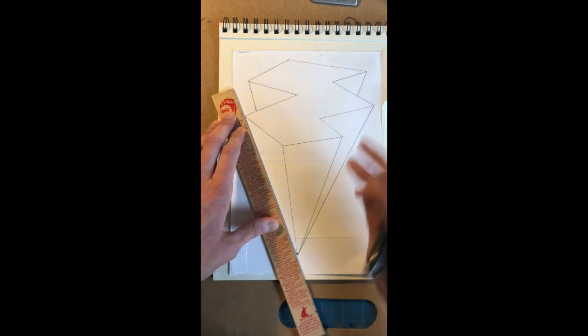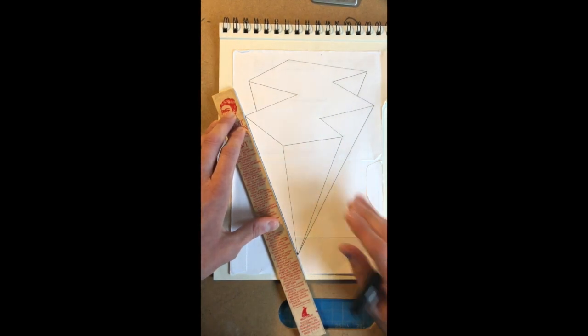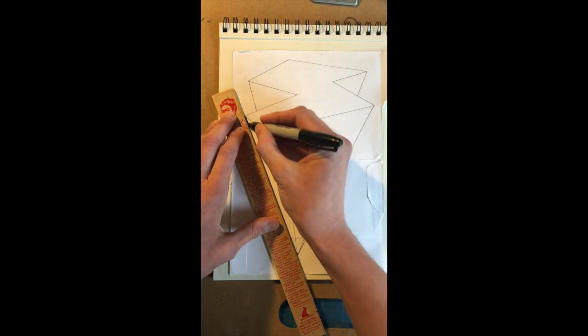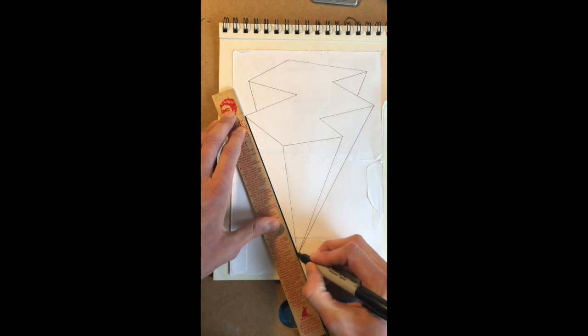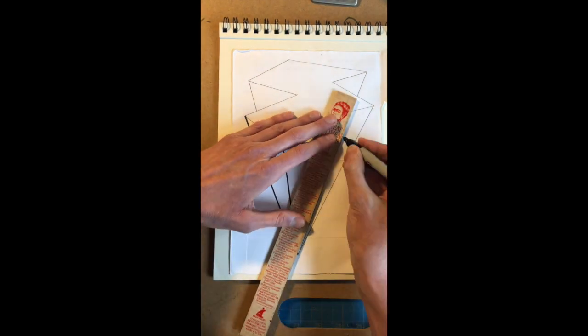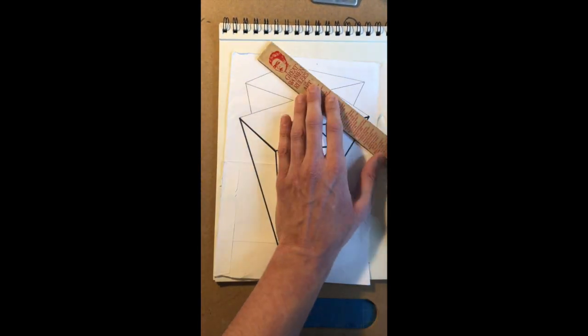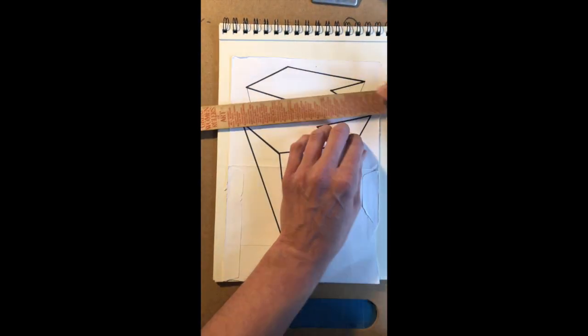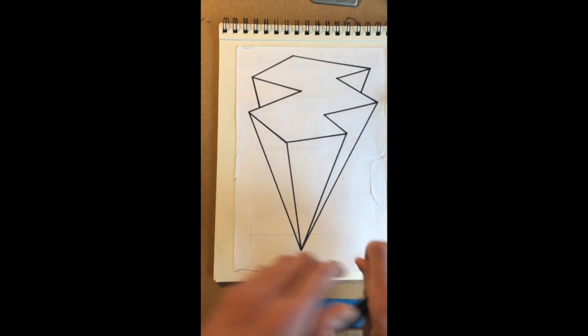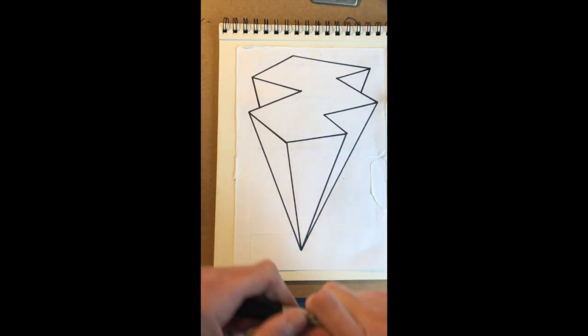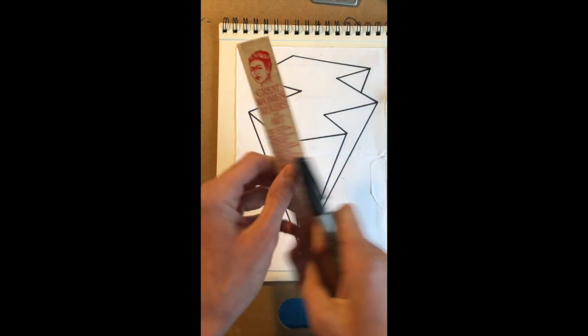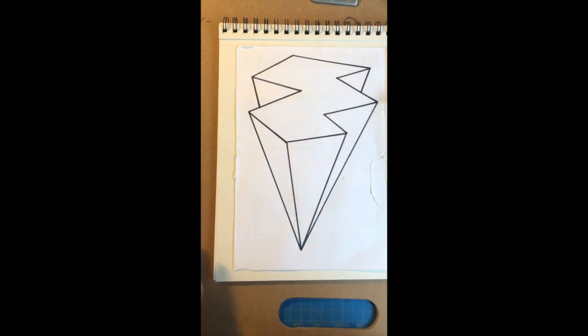Once you have your material ready, you can use your straight edge and just go over all those lines carefully. Once you've gone over all your lines and created a nice bold outline, it's time to talk about color.